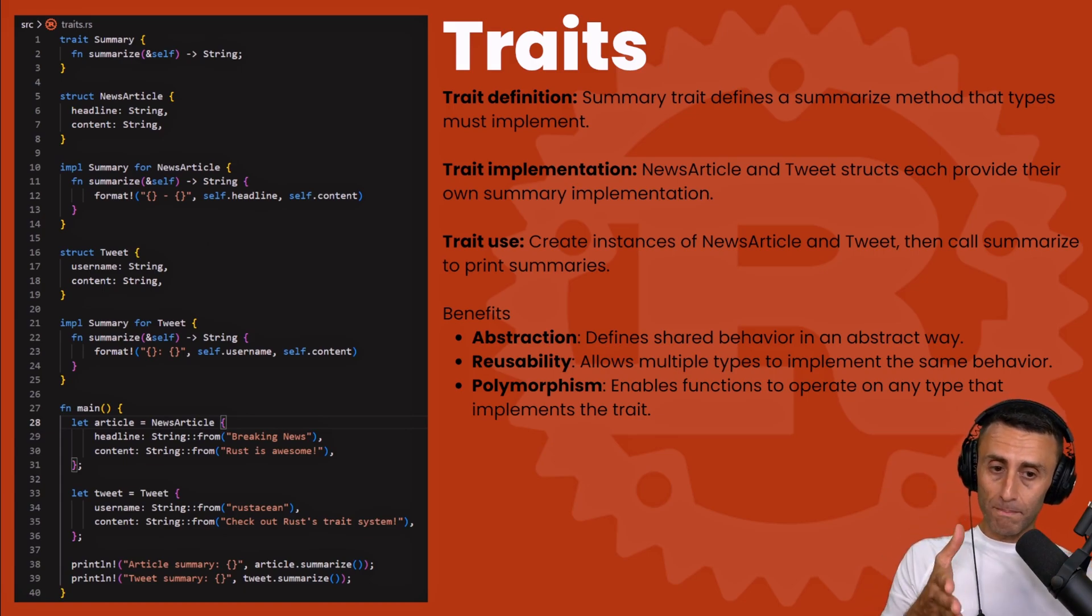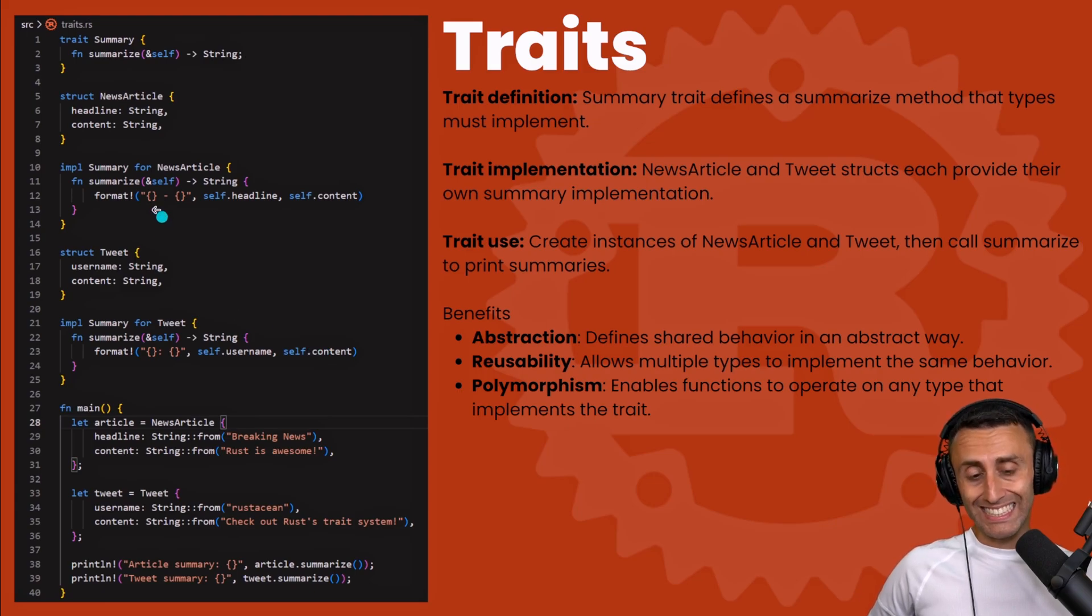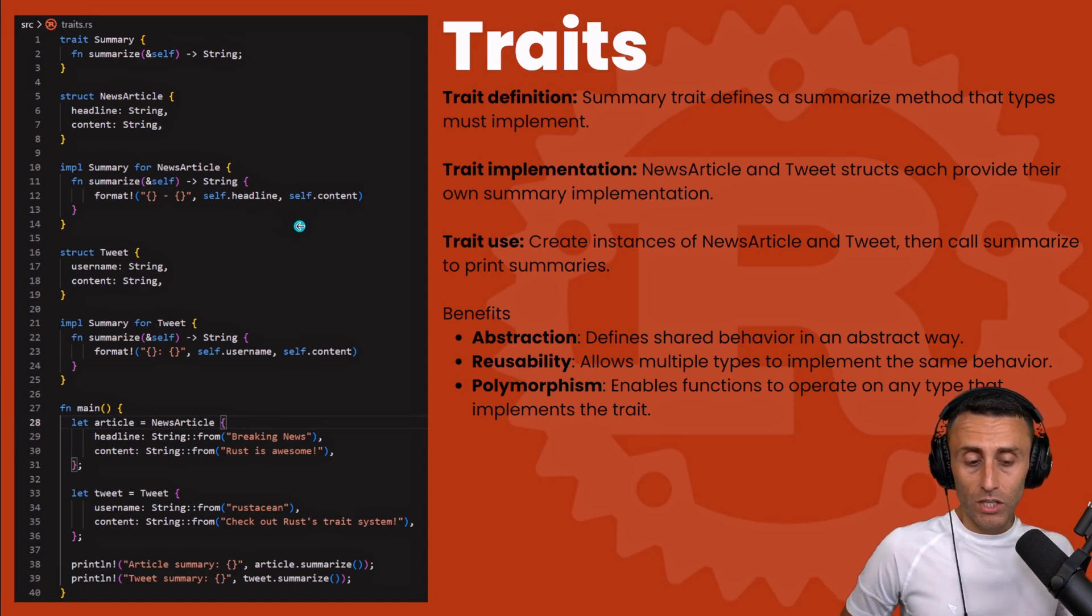We want here to implement the trait in the method of the structure. Check line 10 - it's very important: impl Summary, which is basically this sort of interface for NewsArticle. And this is how we implement the summary for the news article. And check line 21, we implement a summary for the tweet. In this case you see that we have self.username and self.content. Instead, for the news article, we have - check line 12 - format self.headline, self.content.